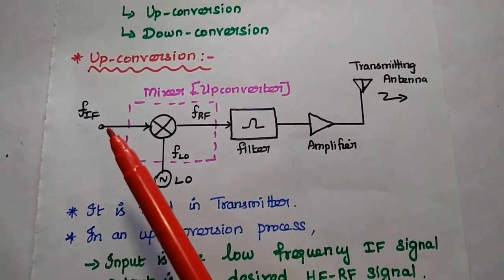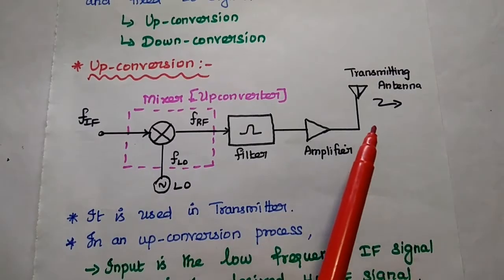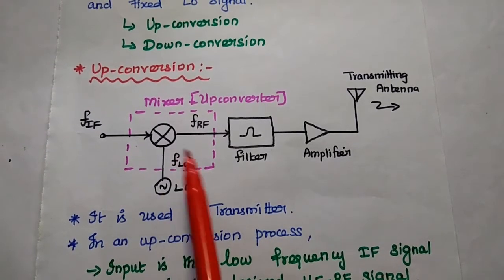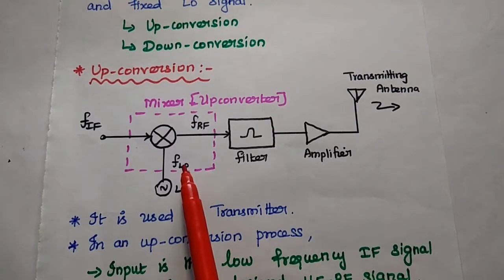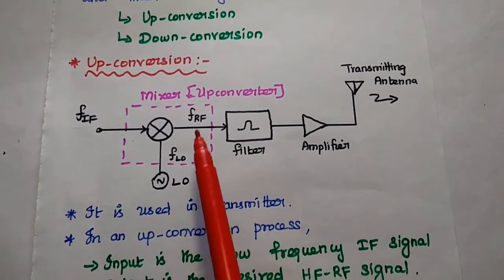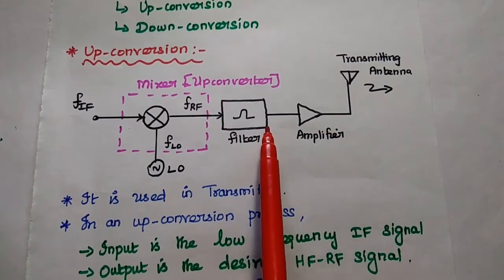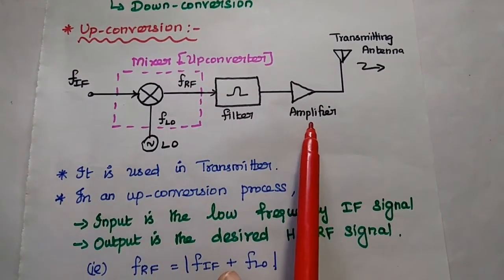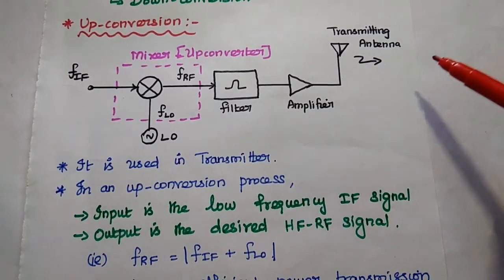In up conversion, the intermediate frequency signal is the source signal that we want to transmit to a longer distance. To do that, we have to increase the signal frequency by mixing the input signal with a fixed frequency from the local oscillator. The mixer combines these two signals, producing sum and difference frequencies at the output. We then use a filter to select the up-converted signal, followed by an amplifier to boost signal strength, and the transmitting antenna sends the signal to a longer distance.